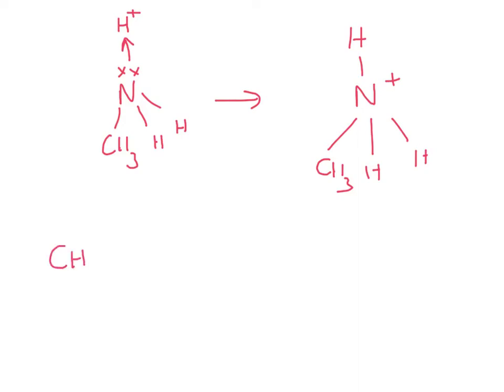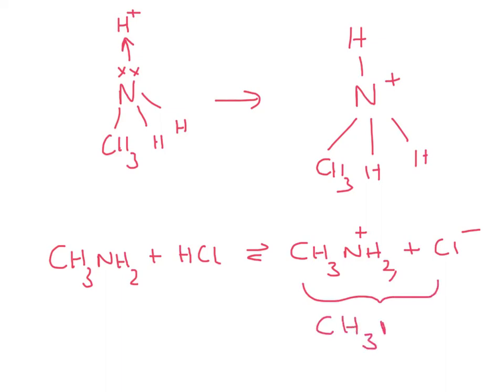CH3NH2, that's our methyl amine, reacting with our acid, HCl, forming methyl ammonium ion and chloride ions. We can draw them as separate ions or we can draw it as the compound methyl ammonium chloride.